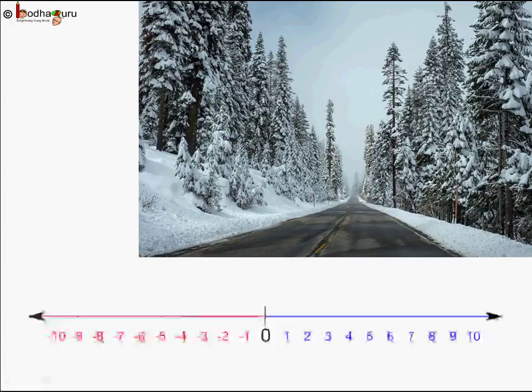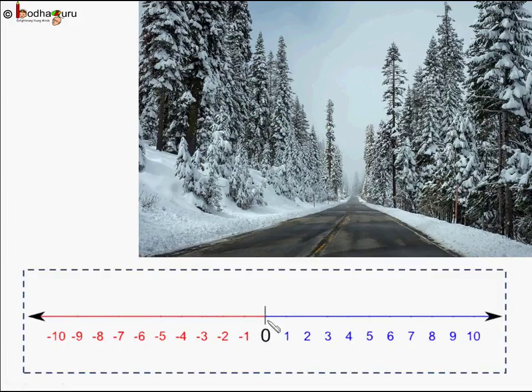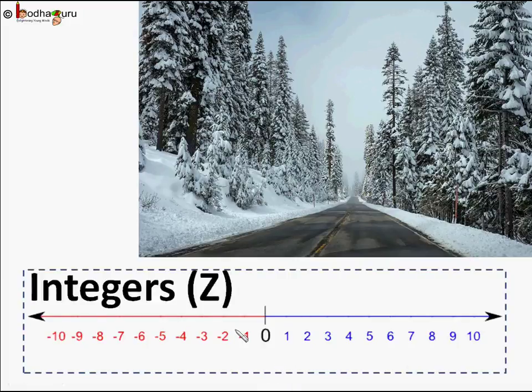Now coming to negative numbers — we have negative temperatures, sometimes negative marks. So the collection of negative numbers and whole numbers is called integers. All the negative numbers, 0, and all the positive numbers together are called integers, and it is denoted by Z.